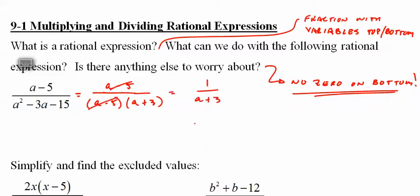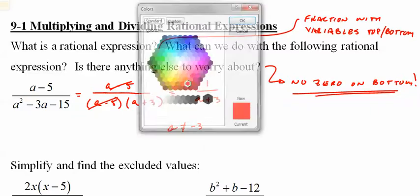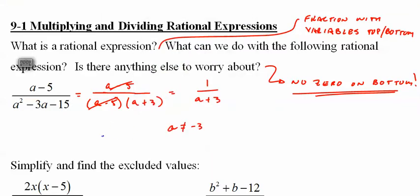That's not it. Since we can't have a zero on the bottom, we have to say a cannot equal clearly negative 3. However, here's an interesting point. A can't equal 5 either. To which you might say, well, we canceled that. We don't need it anymore. I'll say yeah, but it's part of the original equation.